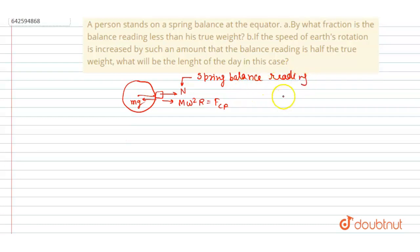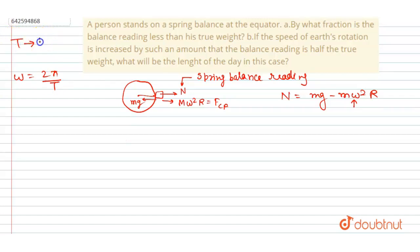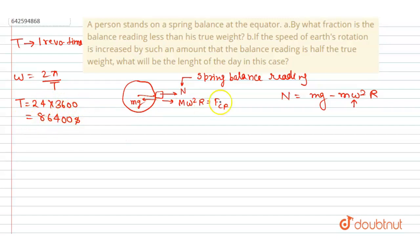The normal reaction in this case is N = mg − mω²R. Now, what is omega here? Omega is 2π/T, where T is the time for one revolution. The Earth takes 24 hours for one revolution, which we multiply by 3600 to convert to seconds, giving T = 86400 seconds.